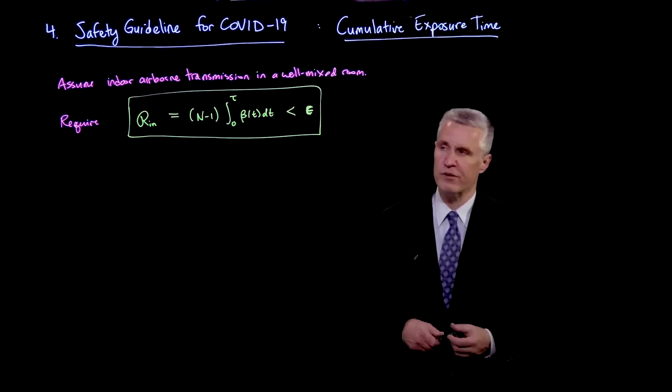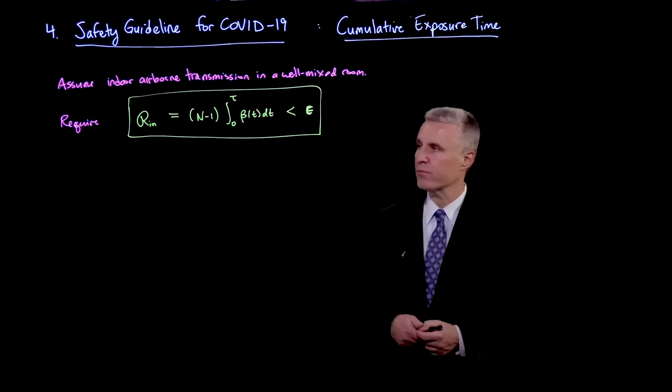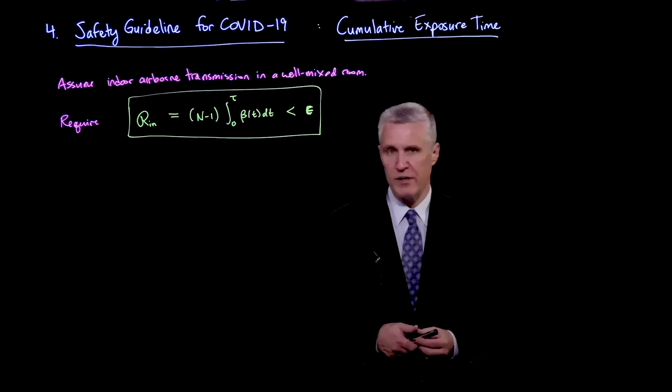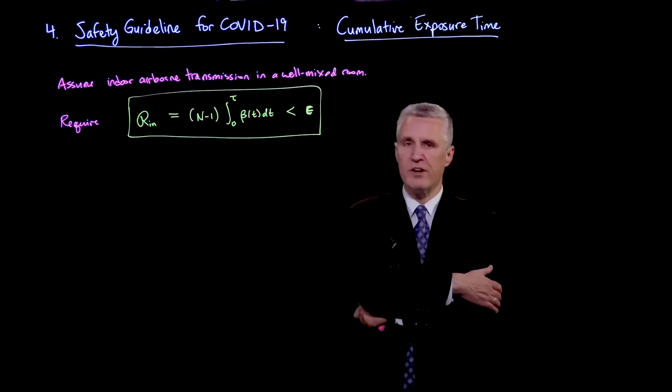Assuming indoor airborne transmission in a well-mixed room, there's a number of ways we could go about this. The approach I would like to propose is that we require that the indoor reproductive number is less than some tolerance.